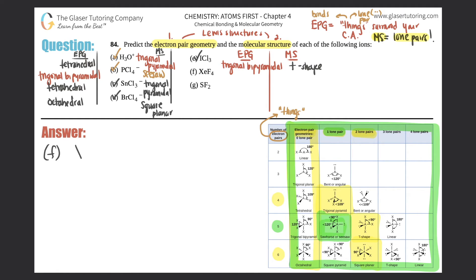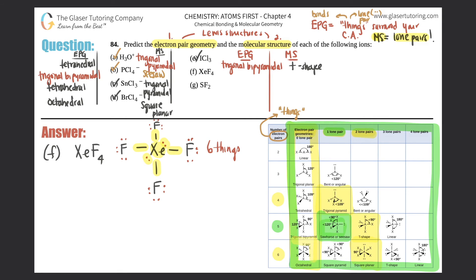Part (f): XeF4. Xenon is in the middle surrounded by four fluorines, each with three lone pairs for the octet. Xenon has two lone pairs. The central atom has four bonds and two lone pairs — six total things — so the electron pair geometry is octahedral. With two lone pairs, the molecular structure is square planar.